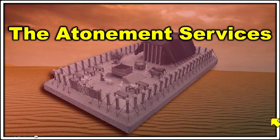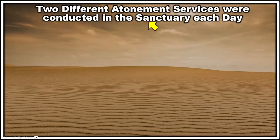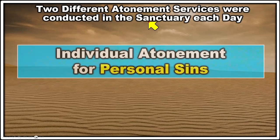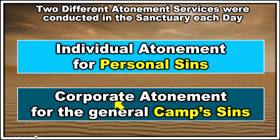Now we're going to look at the atonement services conducted in the tabernacle. There were two different atonement services conducted each day in the sanctuary. The first is called individual atonement, for personal sins. The second is what I'm calling corporate atonement — also called 'the daily' in the Bible — and this was for the general camp's sins. We'll go through both of these in the next few minutes.